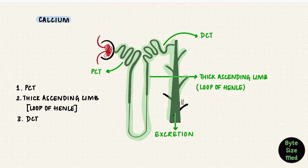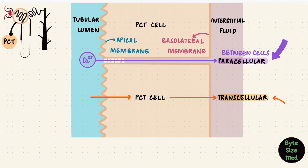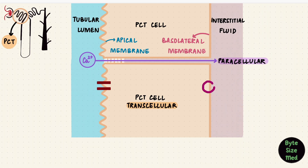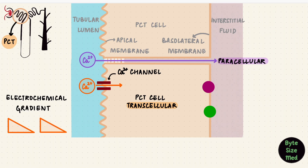As we move along the nephron, paracellular absorption reduces and transcellular absorption increases. Transcellular means it's going through the cell, which requires channels and transporters. There are calcium channels which allow calcium to enter the cell along its electrochemical gradient — that's how diffusion happens, from higher concentration to lower concentration, and for positive ions like calcium, from more positivity to less positivity.